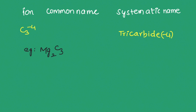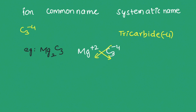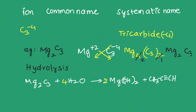The formula for magnesium carbide is derived using the crisscross method: magnesium has a +2 charge and this carbide ion is C₃⁴⁻. Applying crisscross gives Mg₄C₃ taken twice, then simplifying gives Mg₂C₃. On hydrolysis, magnesium carbide produces propyne.